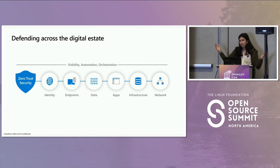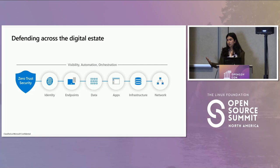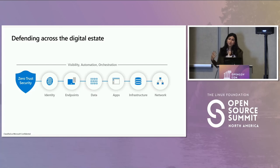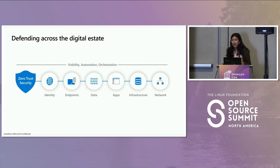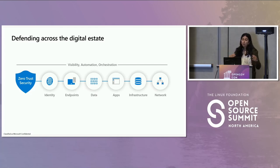To implement a Zero Trust approach across our entire digital estate, we need a strategy that is holistic and end-to-end. We apply Zero Trust controls across foundational elements of our environment — each is a source of signal, a control plane for enforcement, and a resource we need to protect. These span identity, endpoints, data, apps, infrastructure, and network. We monitor all of this with continuous visibility, and we want automation and orchestration so we can respond at cloud speed.